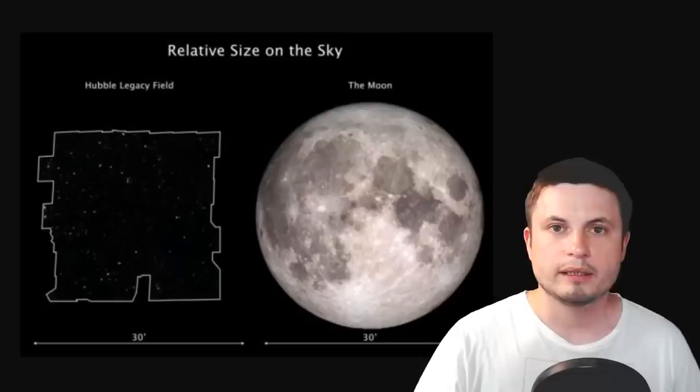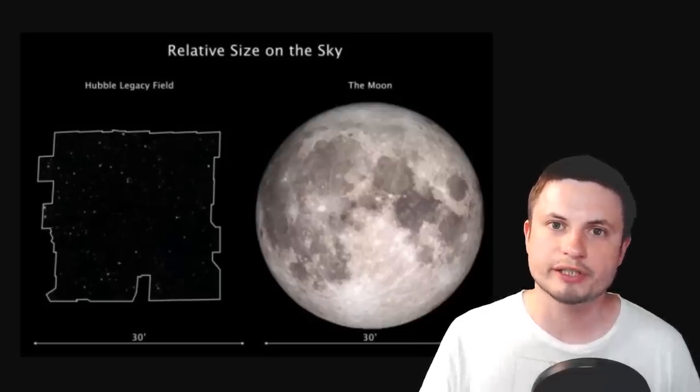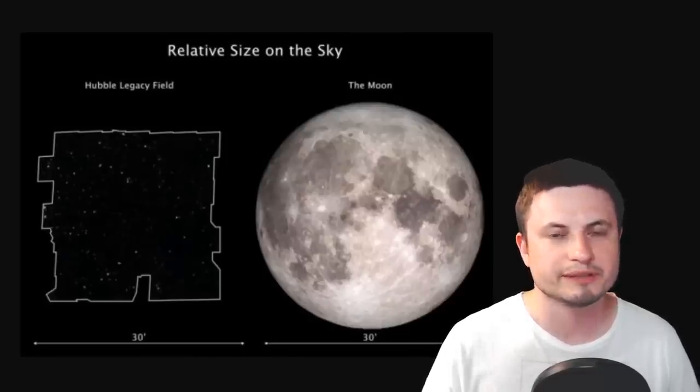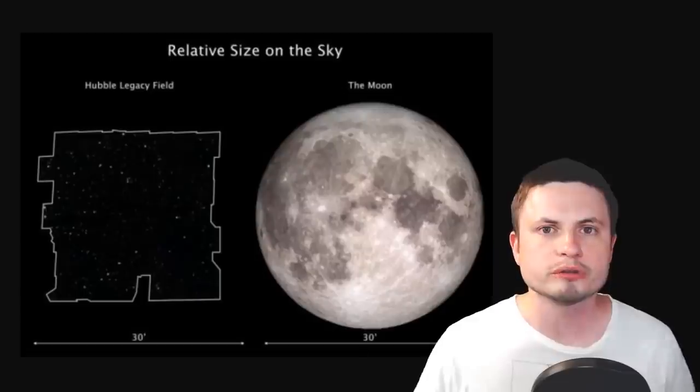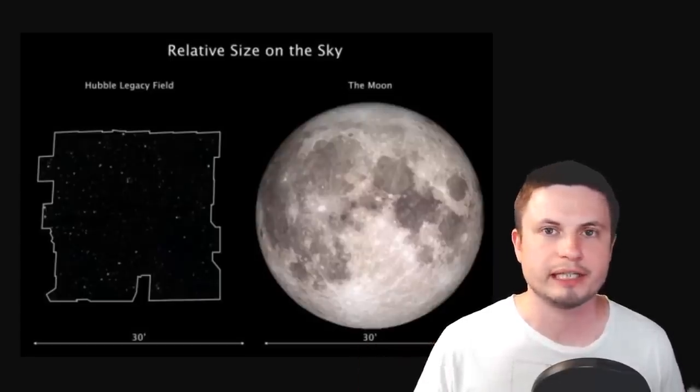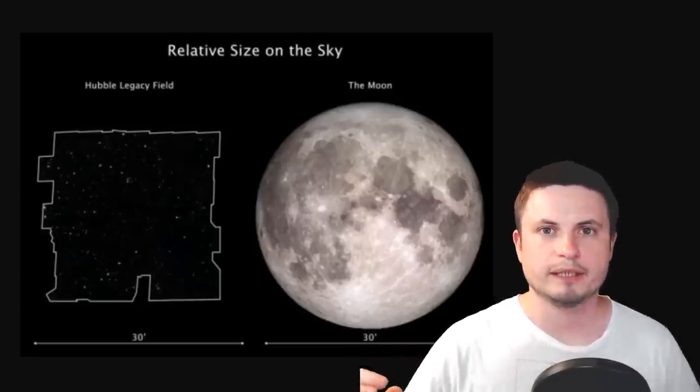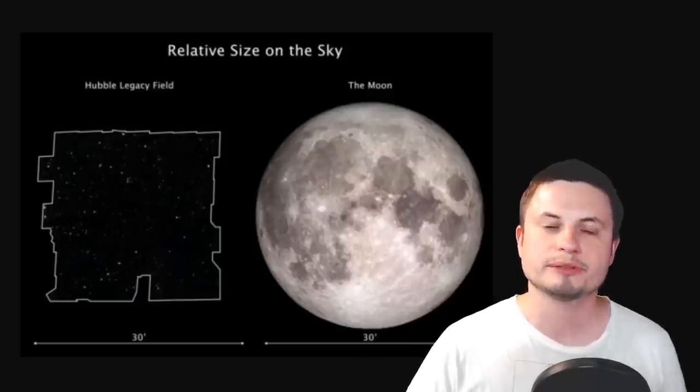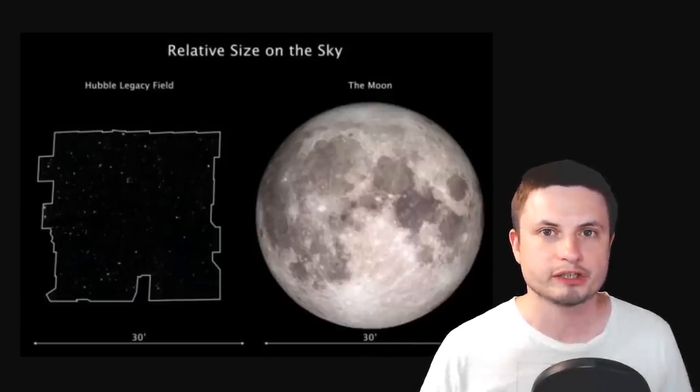Since 1995, over 20 years have passed and we've collected a lot of data from Hubble. Scientists then decided to combine all of this data from various decades, focusing on just one spot in the skies approximately the same size as the full moon, combining ultraviolet, infrared, and x-ray data into a single image made from approximately 7,500 different exposures.